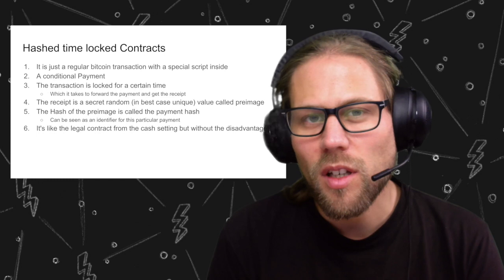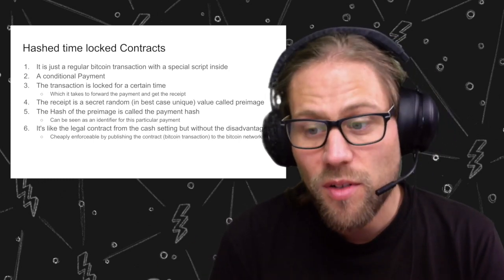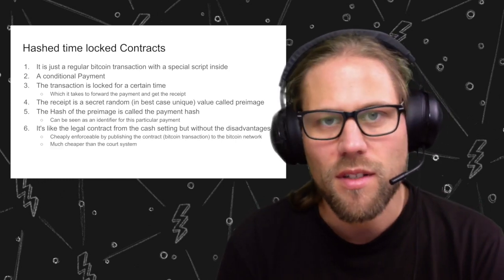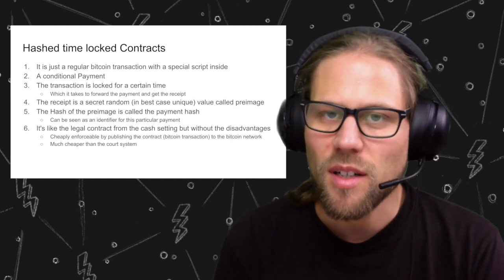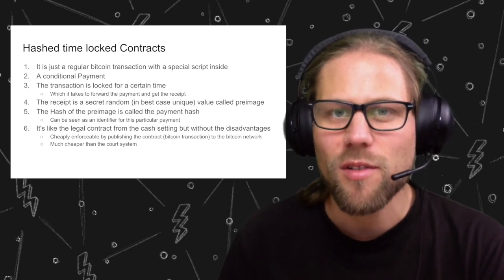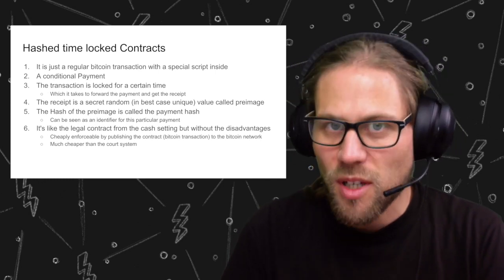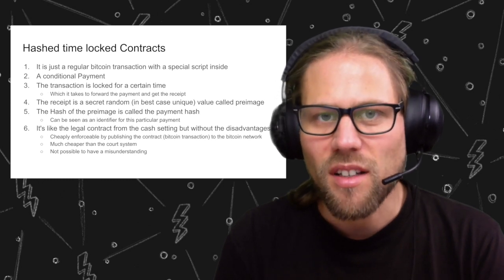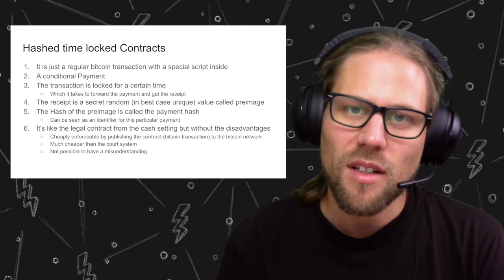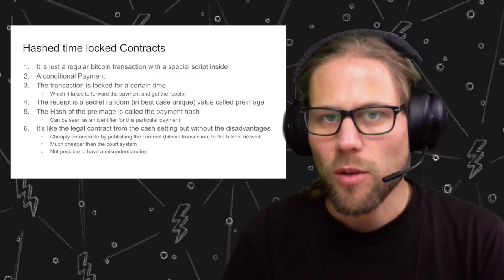This is really like the legal contract from the cash setting, but without all the disadvantages. It's cheaply enforceable by publishing the contract — which is a Bitcoin transaction — to the Bitcoin network and having it mined in the blockchain. That settles all the rules because they were programmed. It's much cheaper than the court system. The idea of the Lightning Network is to do everything off-chain: you just have this contract, and only in the case of a disagreement or a computer failure do you publish it to the blockchain. There's no misunderstanding — the contracts are programmed identically, and everyone knows the protocol.